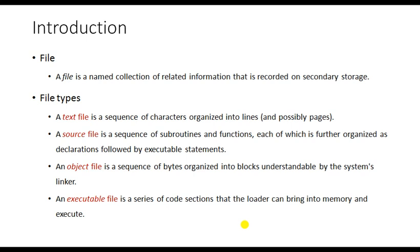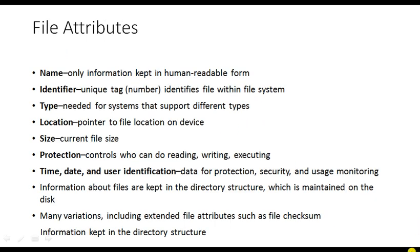File types are classified into text file, source file, object file, and executable file. Every file contains certain attributes for identification purposes. The first attribute is name — by using the name, a person can easily understand the file. The name is in human-readable form. For example, you generate a text file named 'sample' or a letter in MS Word named 'letter' — by name you can easily identify which file it is.